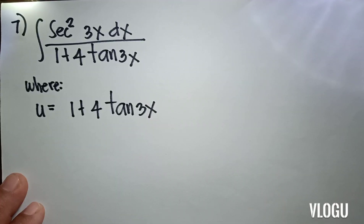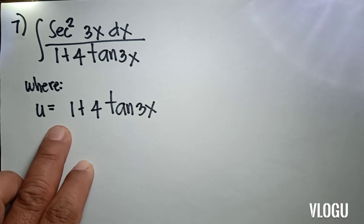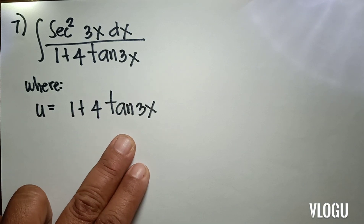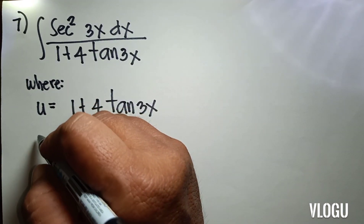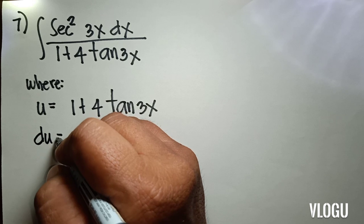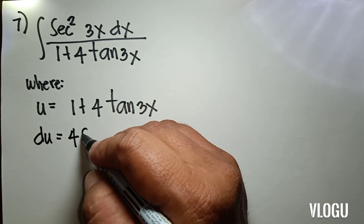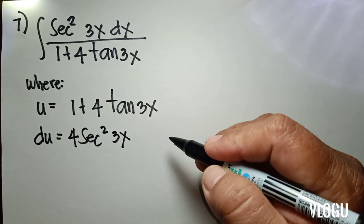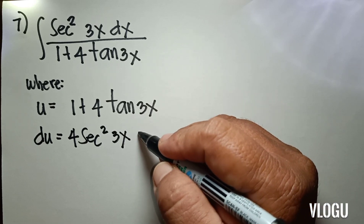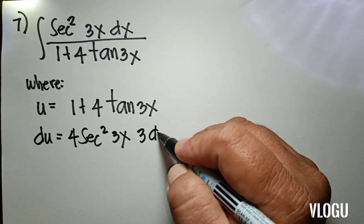Our next example is the integral of sec²(3x) dx over 1 plus 4 tan(3x). Here, u is equal to 1 plus 4 tan(3x). So du equals 4 sec²(3x) times the derivative of 3x, which is 3 dx, giving us du equal to 12 sec²(3x) dx.